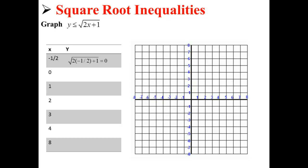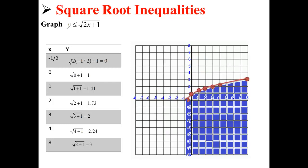For example, when we plug in negative one-half for x, we get the square root of 2 times negative one-half plus 1, which is equal to 0. We do this for all of our x and y values until we have all of our x values, which we're then able to plot on the coordinate plane.